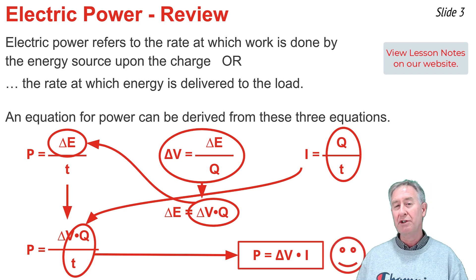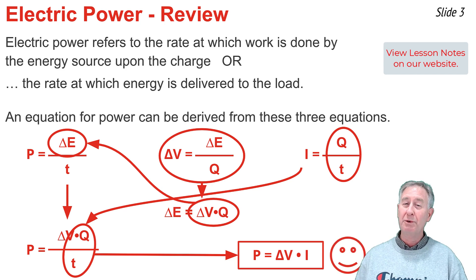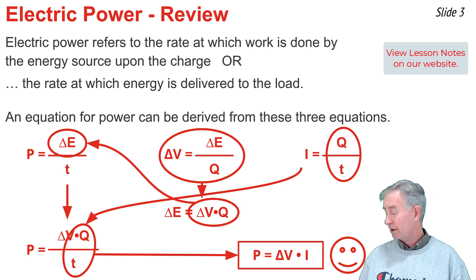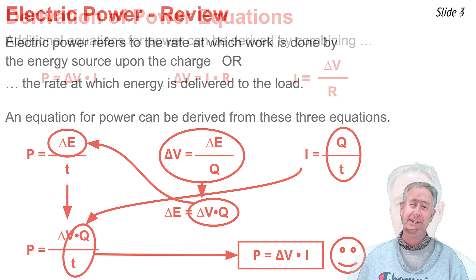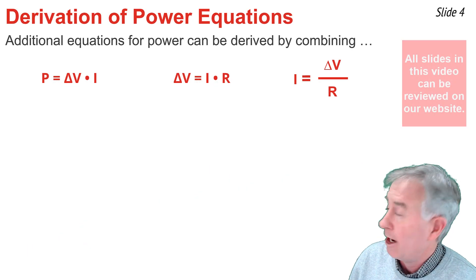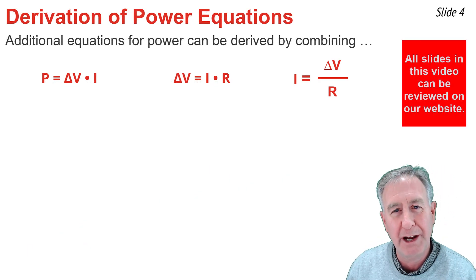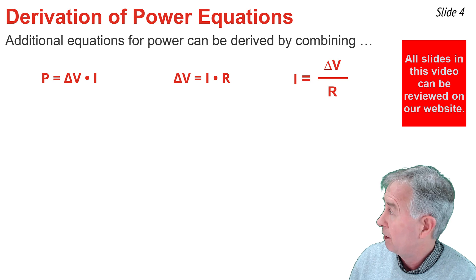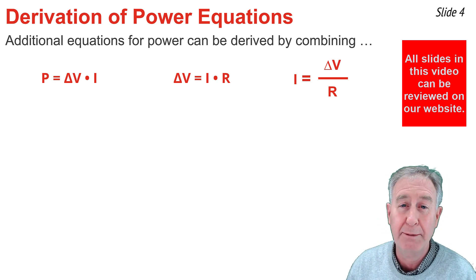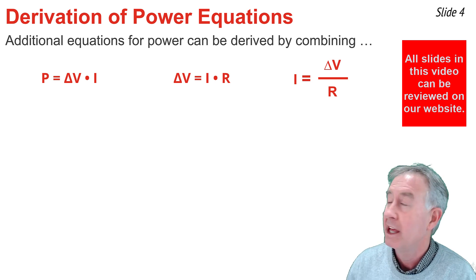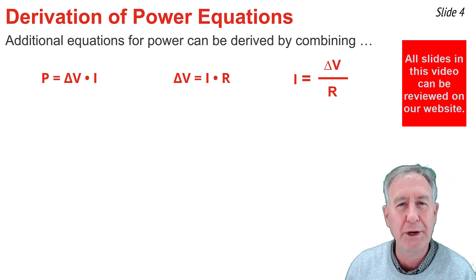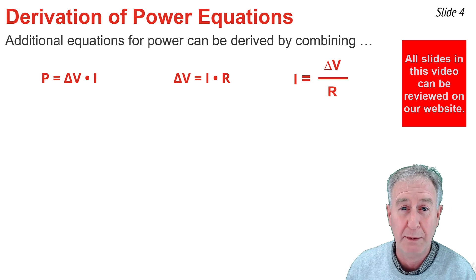This is the first of three equations that we'll be deriving in this video. The other two equations can be derived using this equation and the so-called Ohm's Law equation. The equation on the top left is the equation I just derived for electric power. The middle equation, delta V equal I times R, is the so-called Ohm's Law equation — the big equation in electric circuits. And the third equation is simply a rearrangement of the second equation.